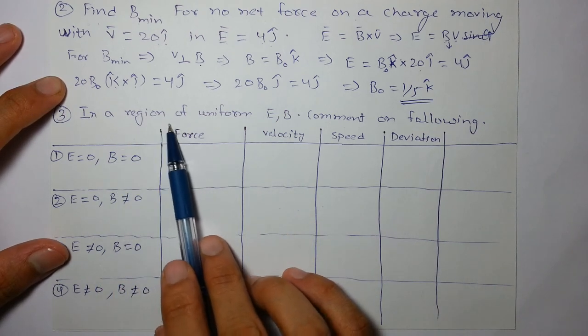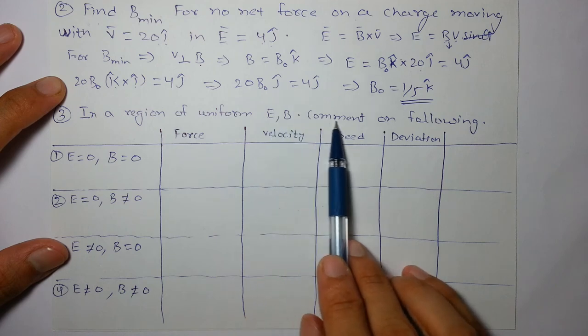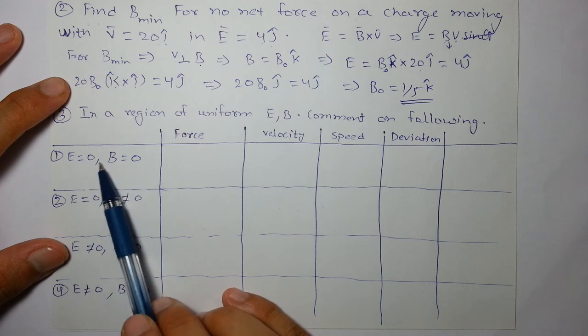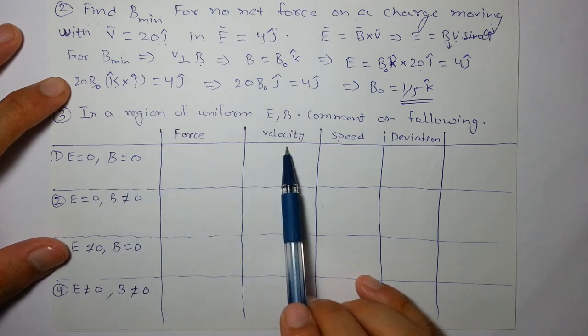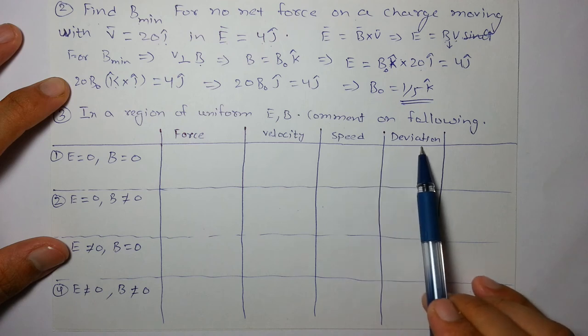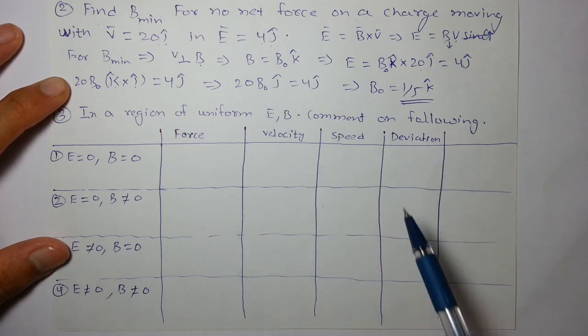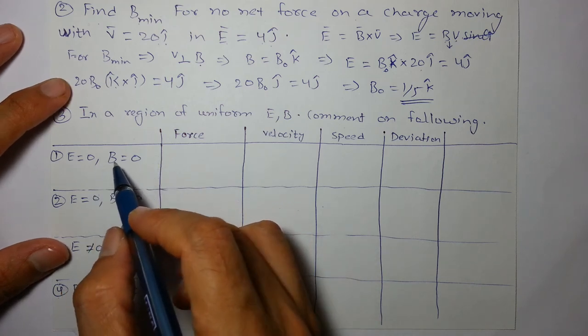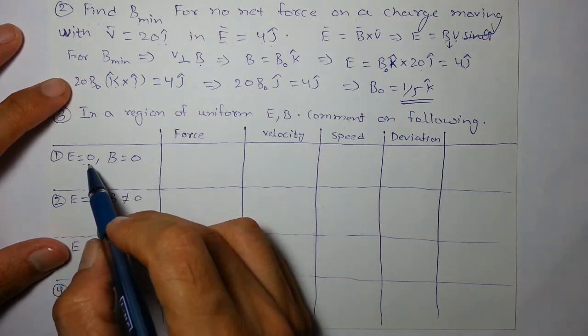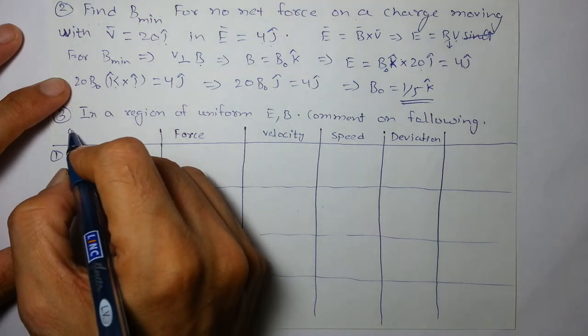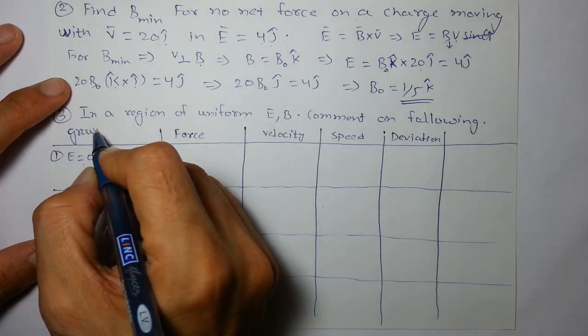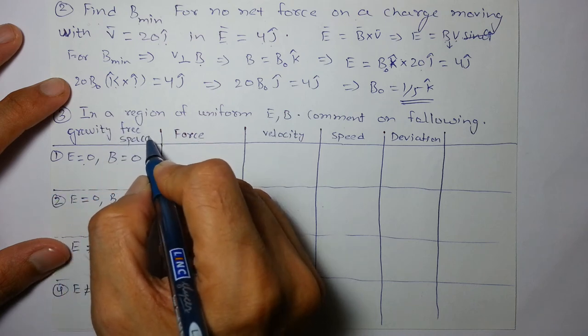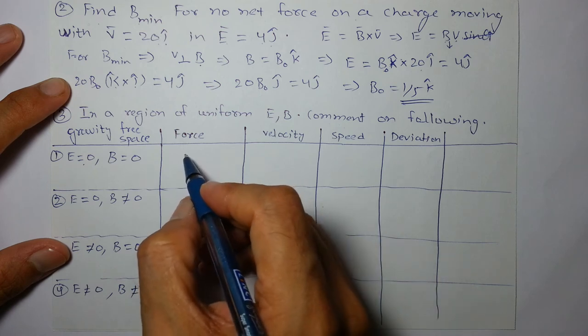In a region of uniform electric and magnetic field, comment on the following. If electric or magnetic field is zero, what will be the force, what effect on velocity, will speed change or not, will there be deviation or not. So this is the question we have to solve. So if a charge particle, E is zero, B is zero, obviously we are assuming gravity free space. Gravity free space. So gravity effect is not going to be left. Force will be zero.